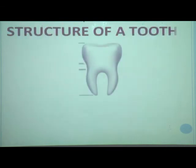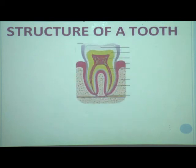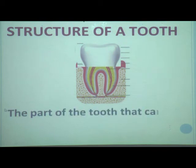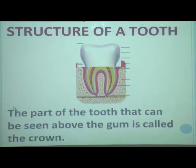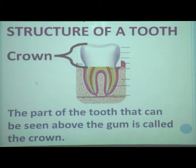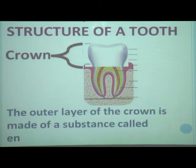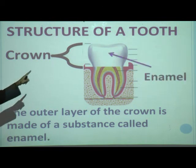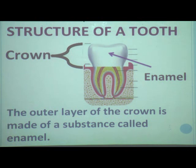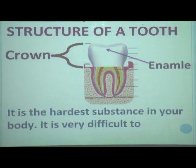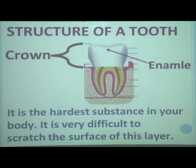Now we will see the structure of a tooth. The part of the tooth that can be seen above the gum is called the crown. The outer layer of the crown is made of a substance called enamel. Enamel is the hardest substance in your body and it is very difficult to scratch its surface.